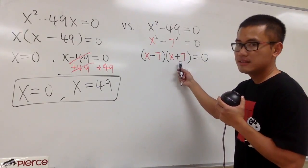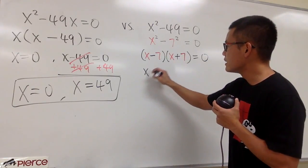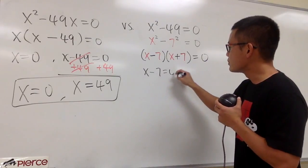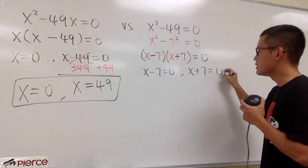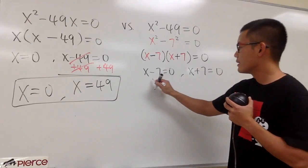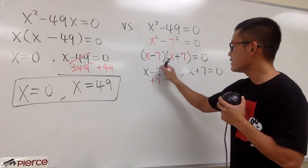This is the first factor. This is the second factor. So, go ahead and do this. x minus 7 is equal to 0. The other one, x plus 7 equals to 0. Right here. Plus 7, plus 7. Cancel this out.